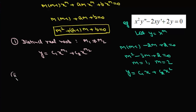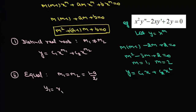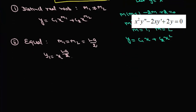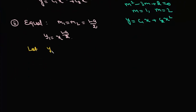Now we have the second case when the roots are equal. If the roots are equal, then m₁ = m₂ = (1 − a)/2, which is half the sum of roots, i.e., −b/a simplified to (1 − a)/2. We know one solution is y₁ = x^((1−a)/2). To find the second solution we use reduction of order from the previous lecture, letting y₂ = u·y₁.